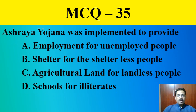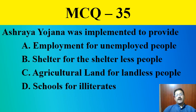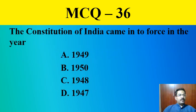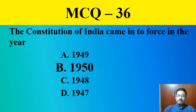MCQ question thirty-five: Ashraya Yojana was implemented to provide — employment for unemployed people, shelter for shelterless people, agricultural land for landless people, or schools for illiterates. The correct answer is shelter for shelterless people. MCQ question thirty-six: The Constitution of India came into force in the year — the correct answer is option B, 1950, specifically January 26th, 1950.